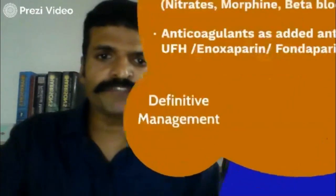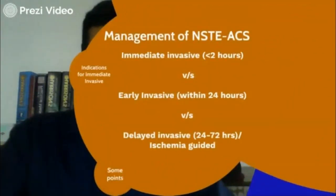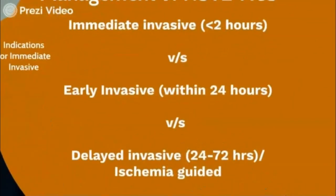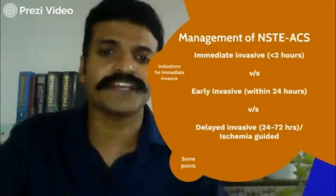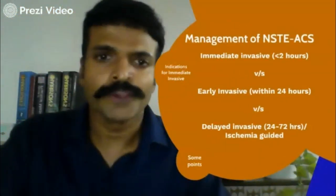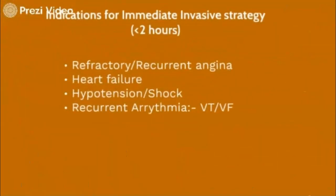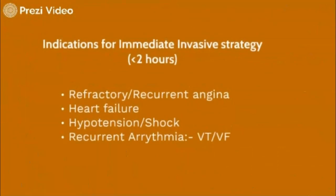To recap, the types of definitive management are: immediate invasive — within two hours you do an angioplasty; early invasive — angioplasty within 24 hours; or delayed invasive — within 24 to 72 hours; or sometimes you don't do an angioplasty at all and let ischemic features guide you. What are the conditions for immediate invasive, that is within two hours? Technically, we are treating this patient like a STEMI.